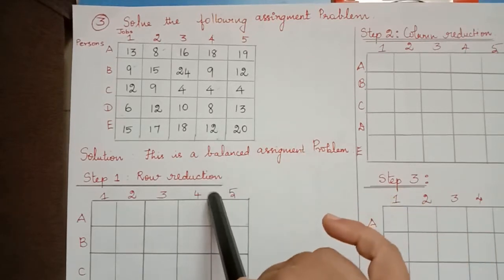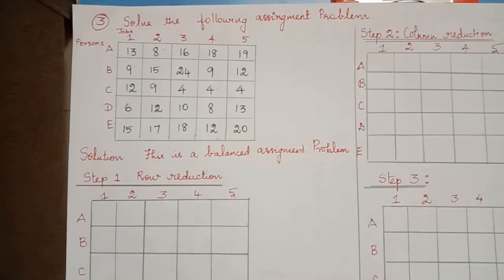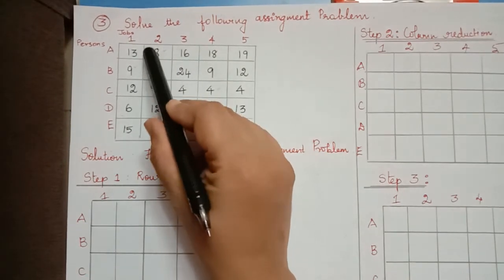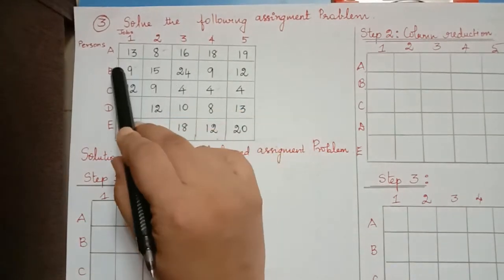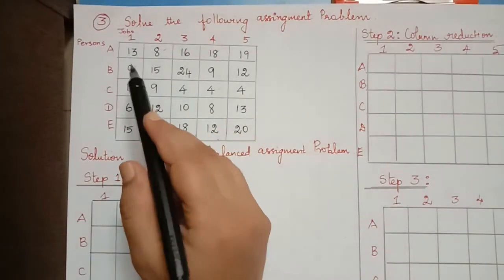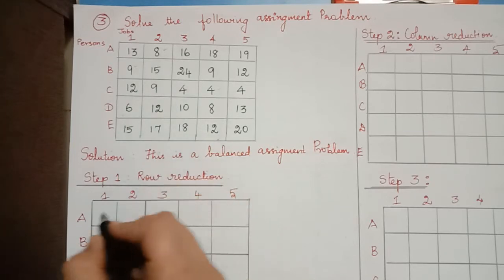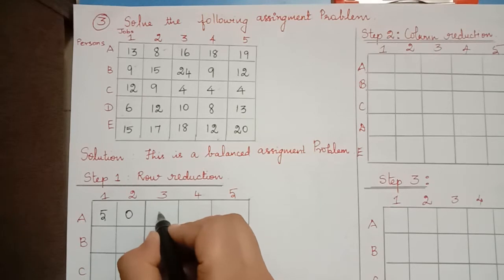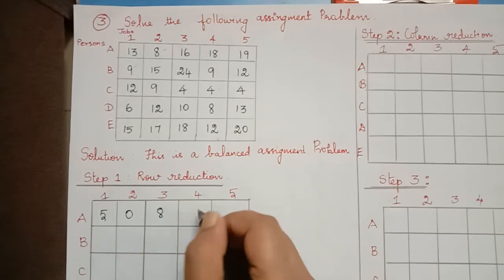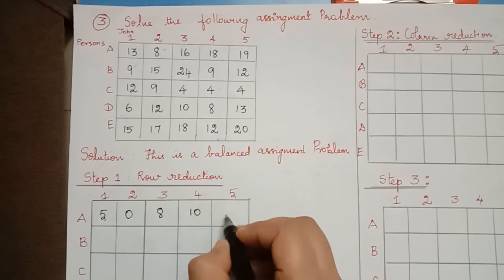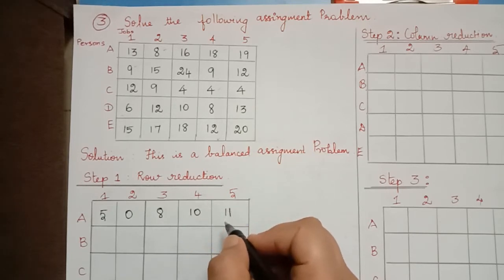Now we have to do the row reduction. In the first row the minimum element is 8, so we have to subtract 8 from the remaining numbers. 13 minus 8 is 5, 8 minus 8 is 0, 16 minus 8 is 8, 18 minus 8 is 10, and 19 minus 8 is 11.